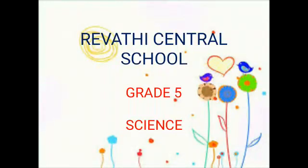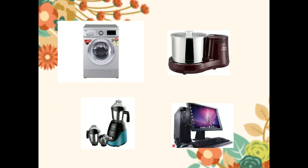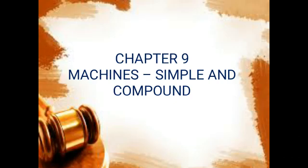Hi children, welcome to Grade 5 Science. Shall we move on to the topic? So before getting into the topic, just observe these pictures and say what are these. Yes, they are machines like a grinder, mixer, and computer. So what are they? They are just machines. What are they for? They are to make our work easier. So today we are going to see about machines — simple and compound machines.